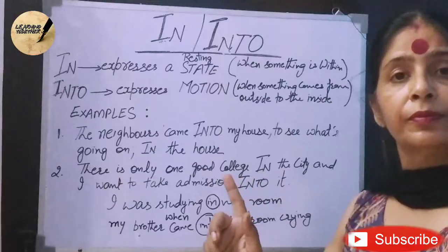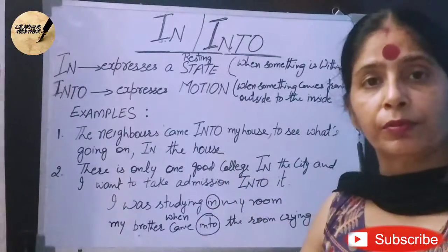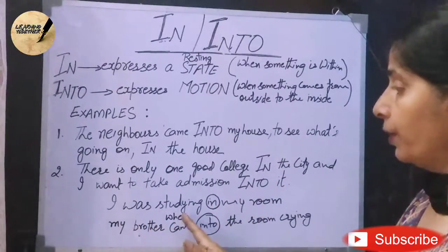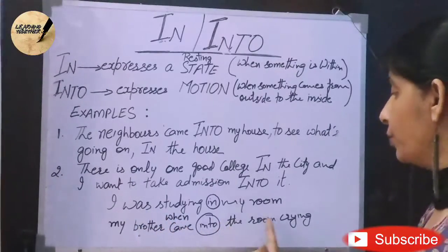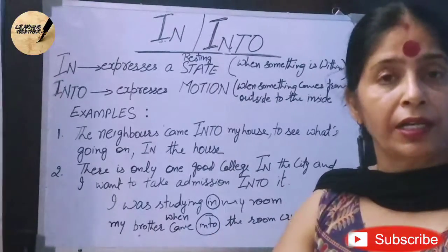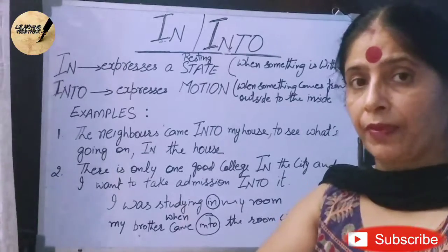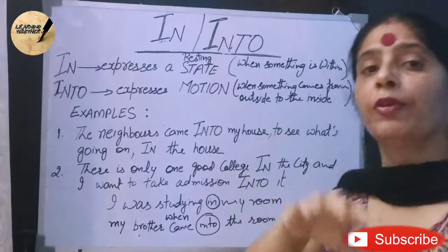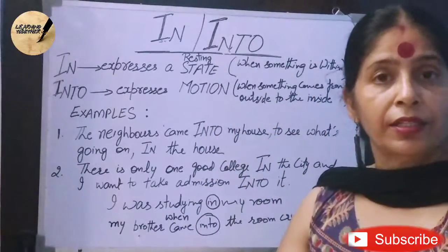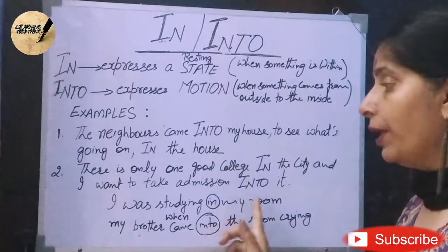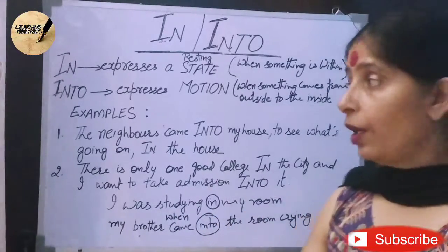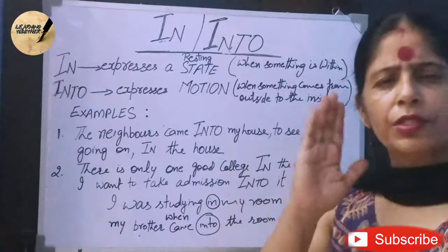Third example: 'I was studying in my room' — he was already in the room, already sitting there, so we use 'in'. 'When my brother came into the room crying' — you won't say 'came in the room' because this shows motion. The brother came from outside to the inside. So: 'I was studying in my room when my brother came into the room crying.'